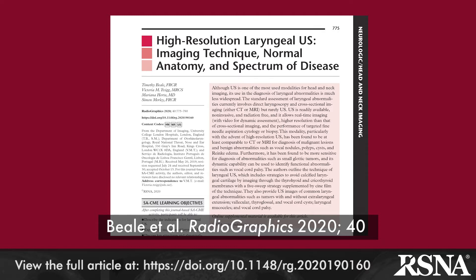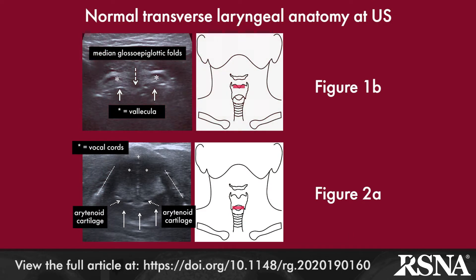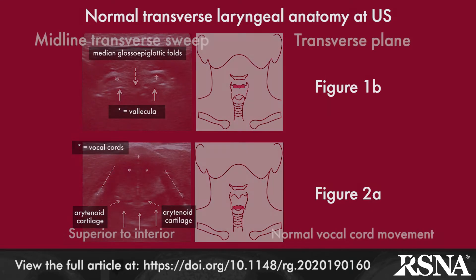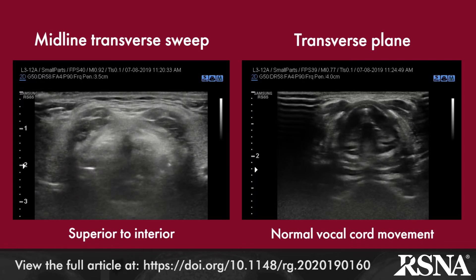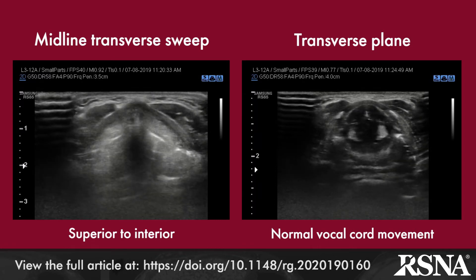ultrasound provides distinct advantages, particularly the ability to assess pathology in real time. The article begins with a detailed description of normal laryngeal anatomy as seen on static transverse and sagittal sonographic images obtained in the midline, as well as the paramedian and parasagittal planes, respectively. Cine clips available in the online article show the normal midline transverse sweep and demonstrate normal vocal cord movement.